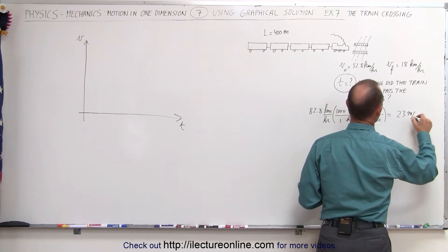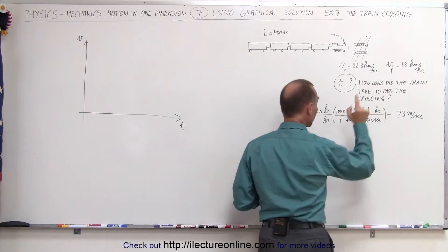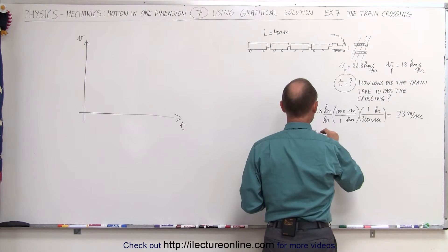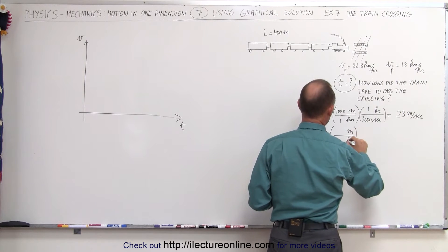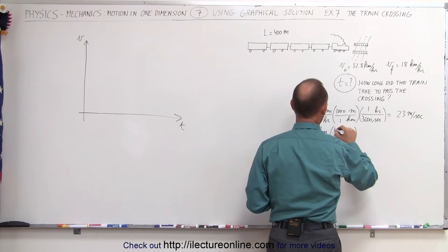That would be the initial velocity. And then converting 18 kilometers per hour, again, converting from kilometers to meters, one kilometer is a thousand meters.